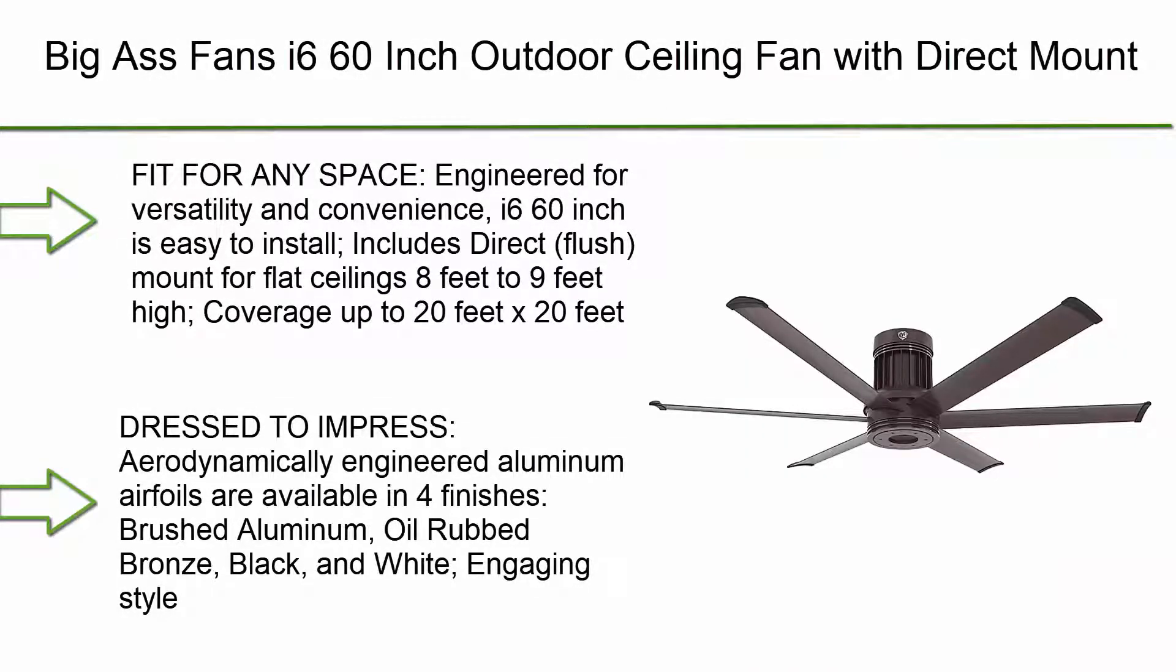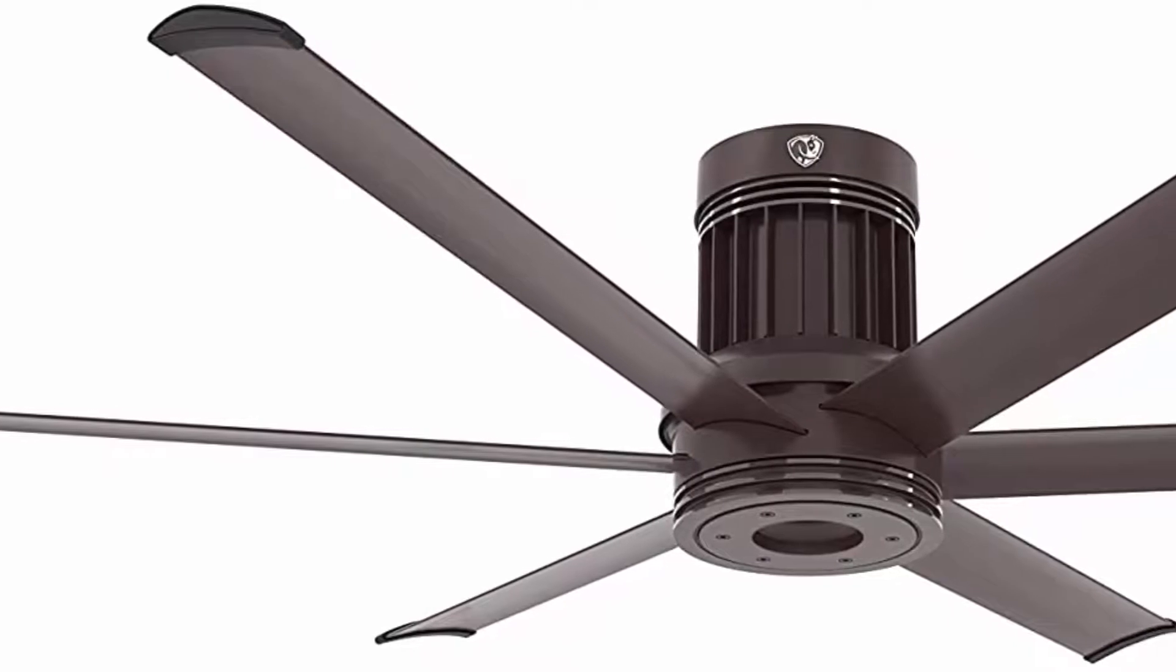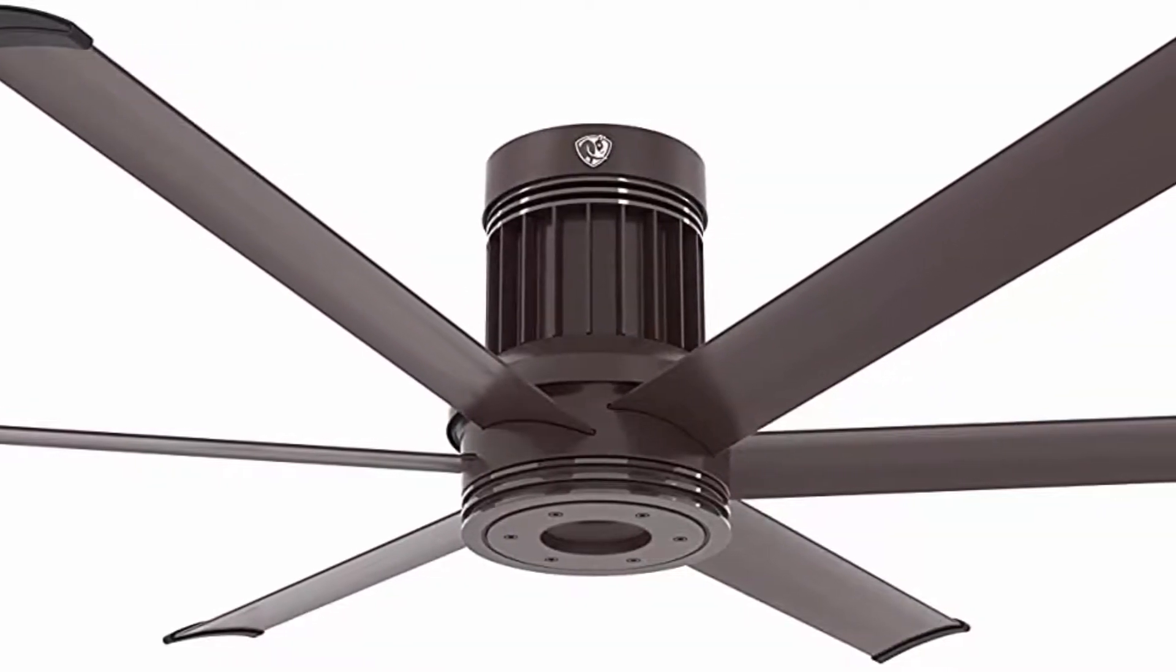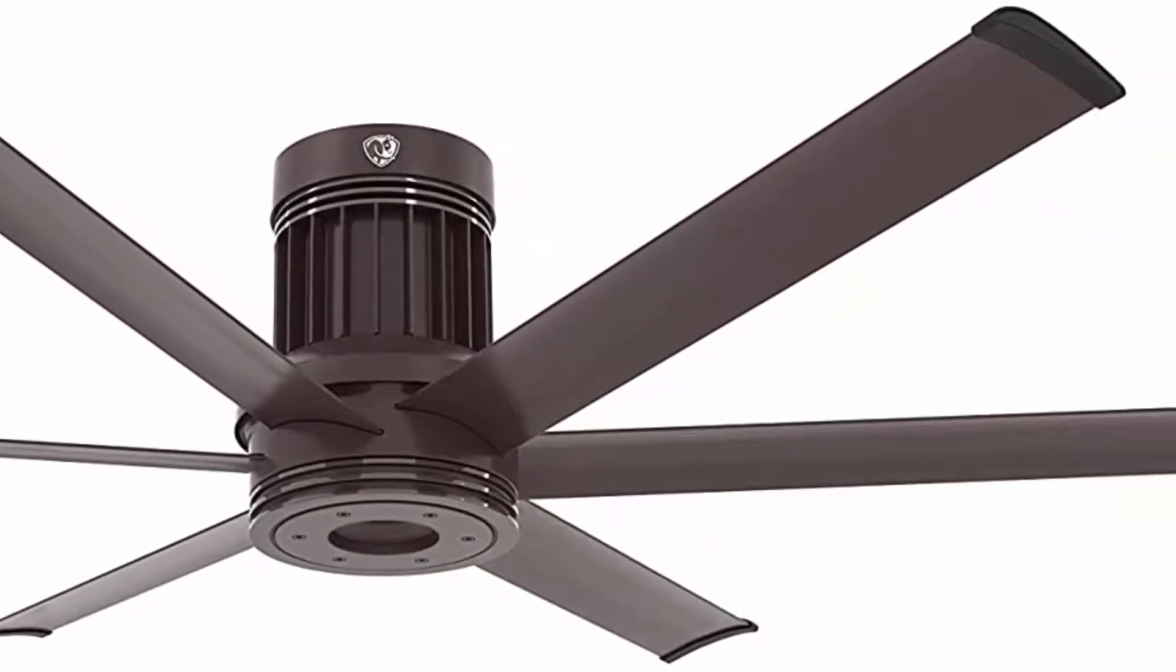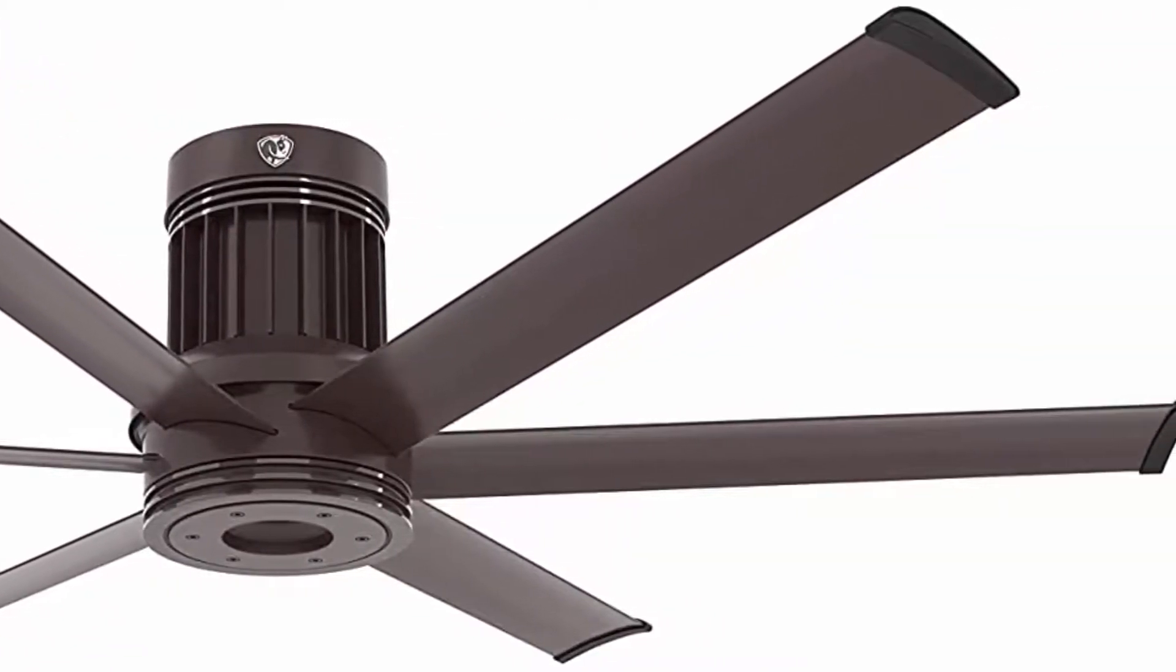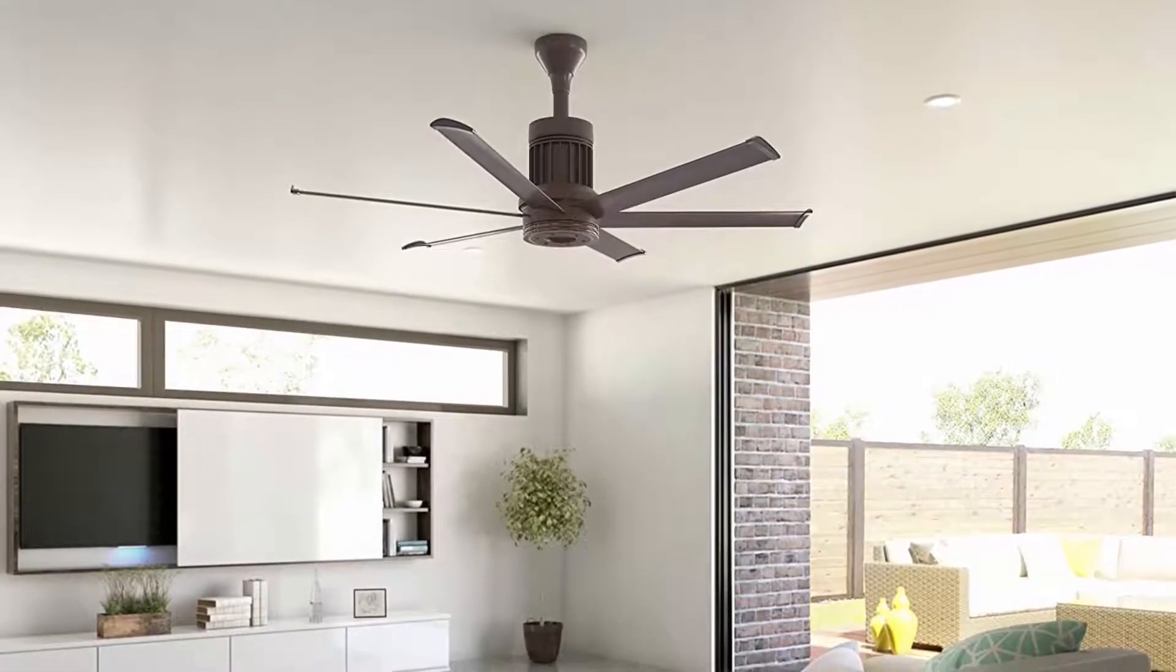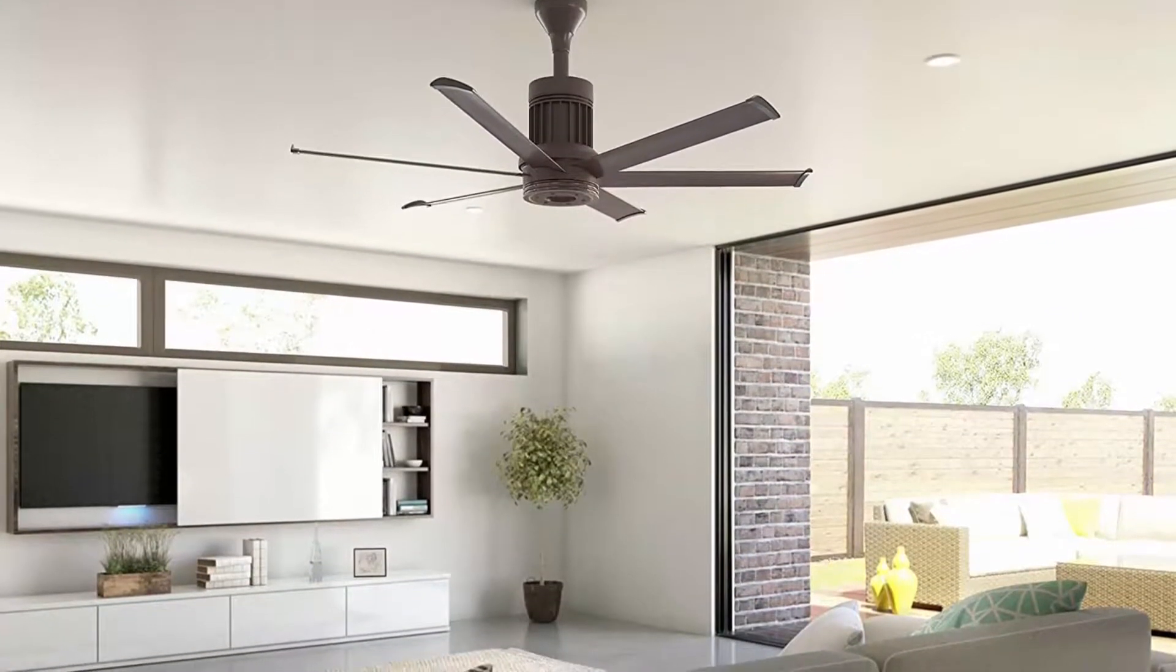Top 9. Big Ass Fans i6 60-inch outdoor ceiling fan with direct mount, oil rubbed bronze finish, SenseMe technology, Bluetooth remote included, residential or commercial. Fit for any space, engineered for versatility and convenience. i6 60-inch is easy to install. Includes direct flush mount for flat ceilings 8 feet to 9 feet high. Coverage up to 20 feet by 20 feet. Bowl design is perfect for modern decor of homes, restaurants, and public venues dressed to impress.